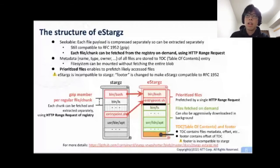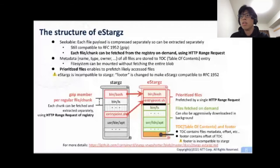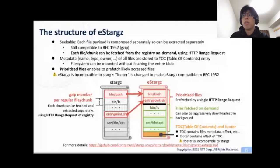Runtimes can selectively download and extract files in a layer from registries on demand. eStargz also enables arbitrary prioritized files to be prefetched by a single range request. This helps the runtime to avoid network-related overheads of on-demand fetching. In the following slides, we will discuss a bit more detail of performance optimization and content verification of eStargz.